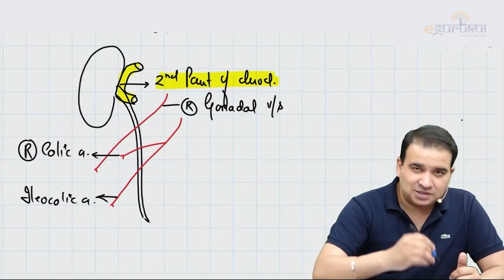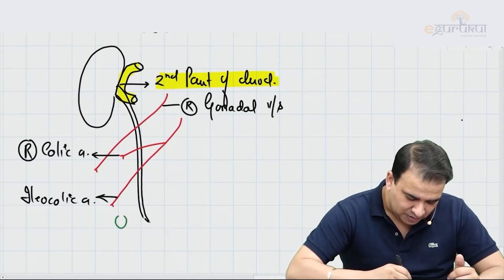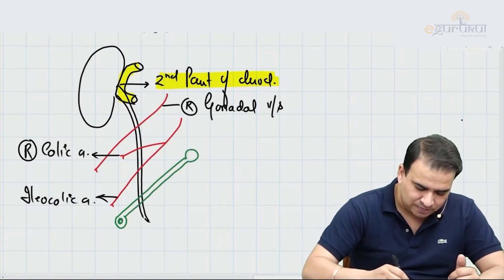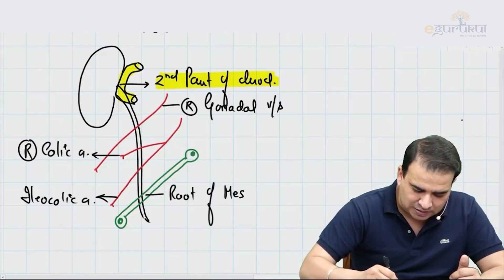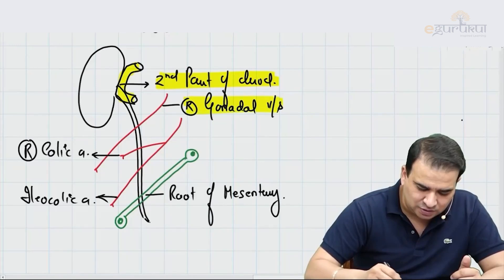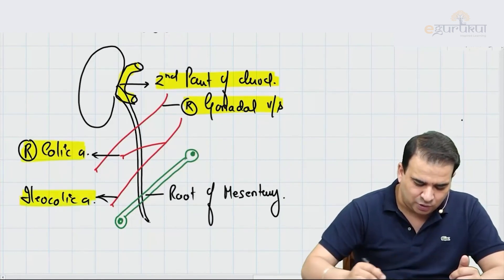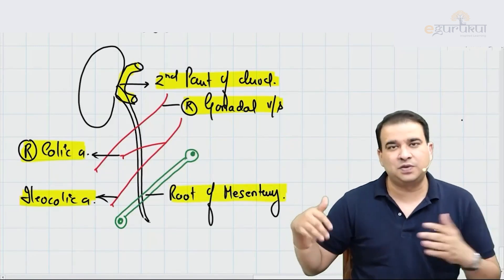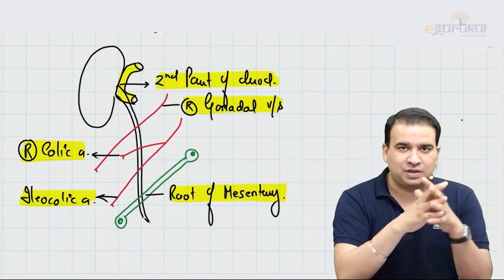The root of mesentery also crosses the right ureter — we discussed this in the peritoneum section. So the anterior relations of the right ureter are: second part of duodenum, right gonadal vessel, right colic artery, ileocolic artery, and the root of mesentery. All of these structures we already discussed; we just need to put them together here.